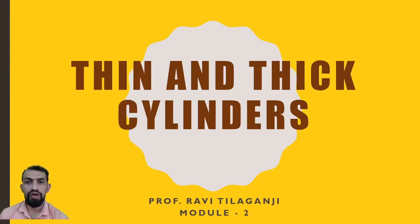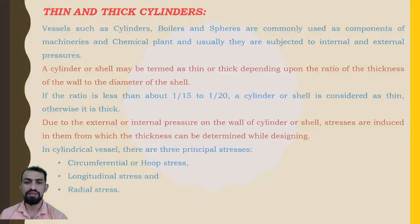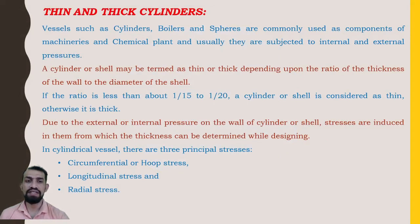Welcome to the video class on Strength of Materials. In this video, we will cover thin and thick cylinders from Module 2. Vessels such as cylinders, boilers, and spheres are commonly used as components of machinery and chemical plants, and are usually subjected to internal and external pressures. A cylinder or shell is termed thin or thick depending upon the ratio of wall thickness to diameter. If the ratio is less than about 1/15 to 1/20, it is considered a thin cylinder; otherwise, it is a thick cylinder.